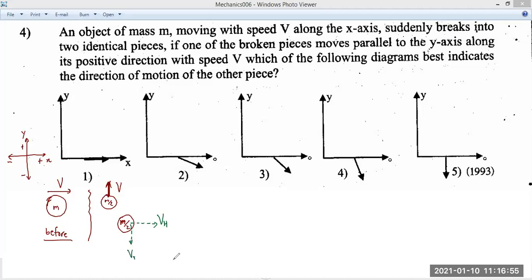And they're asking what is the resultant of these two? Why have I taken m by 2, m by 2? One piece separated into two identical pieces. Suddenly breaks into two identical pieces. So, they should have equal mass.